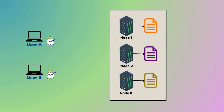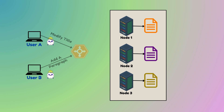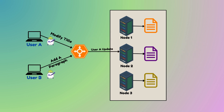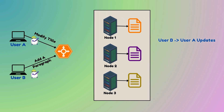Imagine two users — User A and User B — simultaneously making changes to a shared document in a collaborative editing tool. Node 1 receives an edit from User A, but due to a transient network issue, it never receives the edit from User B. Node 2 first receives User A's edit, followed shortly by User B's edit. Node 3 first receives User B's edit and then User A's edit — in reverse order. If each node simply overwrote the document with the most recent edit it received, the nodes could end up permanently inconsistent.